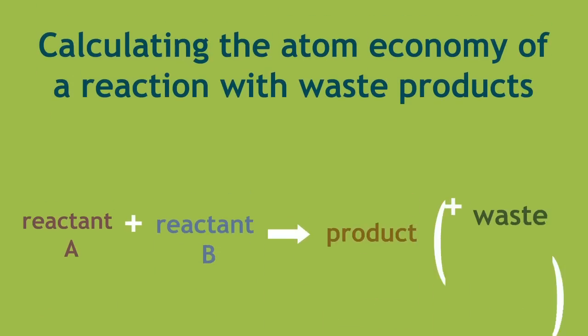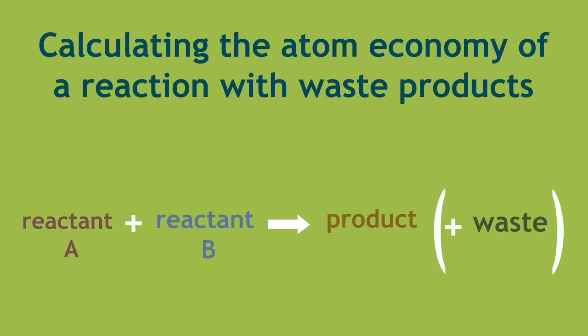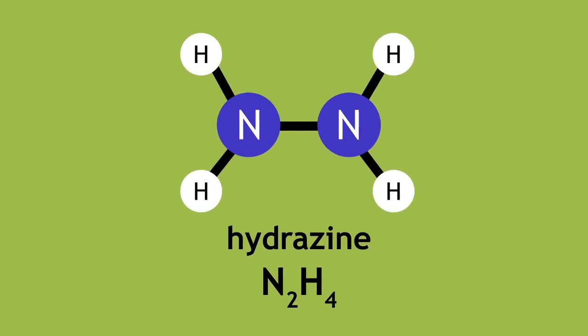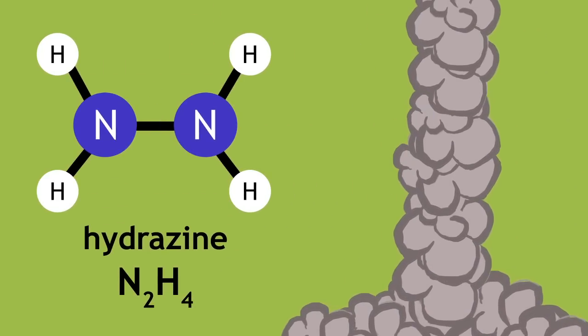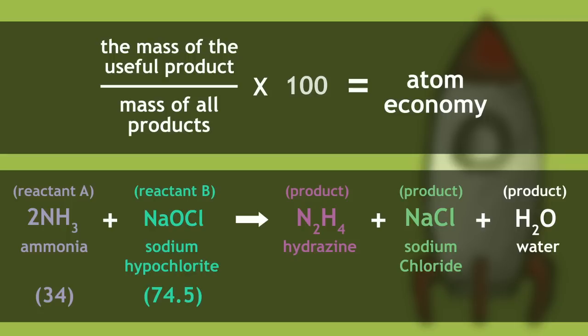So now, let's take a look at calculating the atom economy of a reaction with waste products. Hydrazine is a useful rocket fuel. It can be made in the following reaction. Pause the video now and attempt to calculate the atom economy.